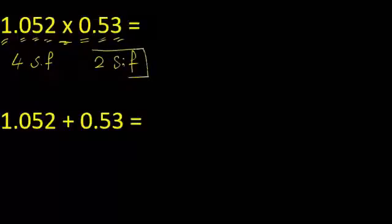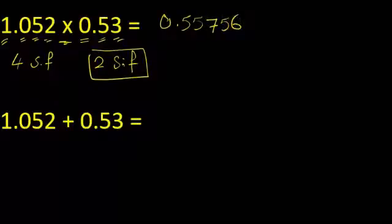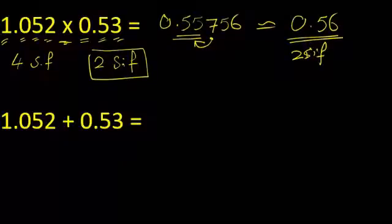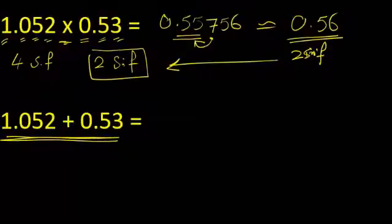In this case, the answer should follow the least number of significant figures, which is two. If we do the multiplication, we get 0.55756. The answer should follow two significant figures, so we use these two digits. However, the seven will round the five up to six, so the answer will be 0.56 — two significant figures, following the least number of significant figures.